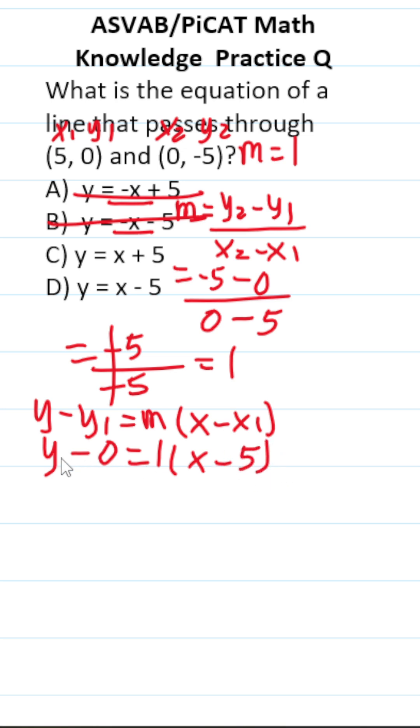All right, let's simplify this. y minus 0 is just y. Now we've got to take this 1 and distribute it here and here. 1 times x is just x. 1 times negative 5 is negative 5. So the answer is D, y equals x minus 5.